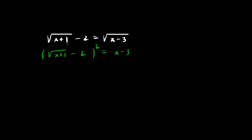So what else can we do besides foiling? The left side now becomes x plus 1. When you multiply the insides, negative 2 root something, doubled, becomes negative 4 root something. And as for FOIL, last times last becomes positive 4, and we have the right side here.